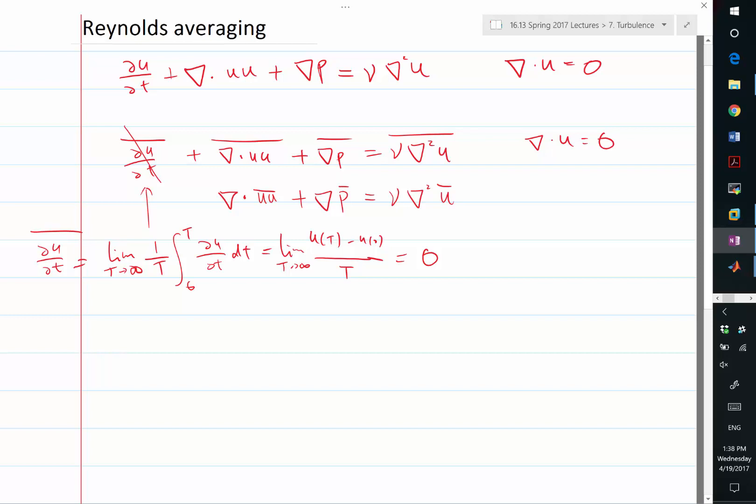So by writing big P as p bar, big U as u bar, we get the Reynolds averaged Navier-Stokes, which is the divergence of uu bar plus gradient of big P equal to nu Laplacian of big U.